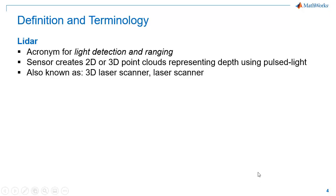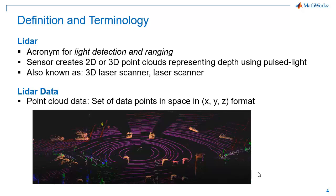Let's start with a quick introduction to LiDAR technology. LiDAR sensors are range measuring sensors like radars and sonars. They create a 3D or 2D representation of the surroundings by measuring distance to objects around them using pulse lights. LiDAR sensors capture surrounding data as point clouds. A point cloud is a set of data points in space which represents a 3D structure of the objects by providing X, Y, and Z coordinates.